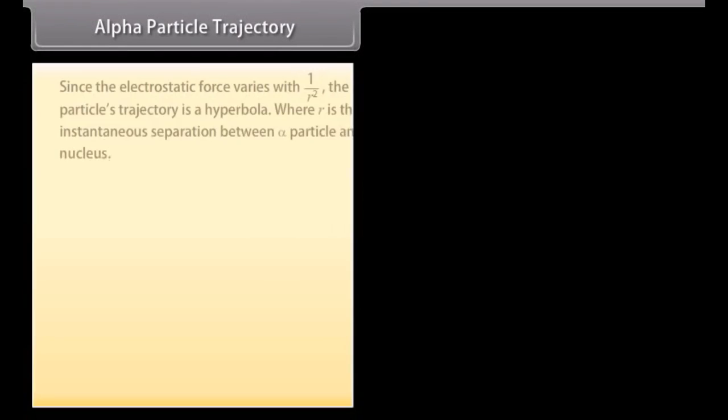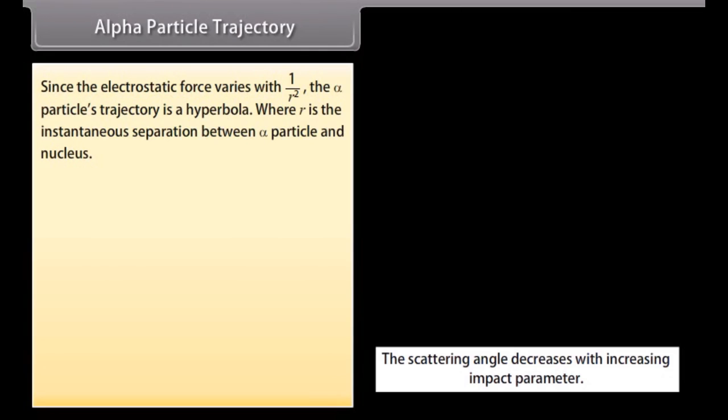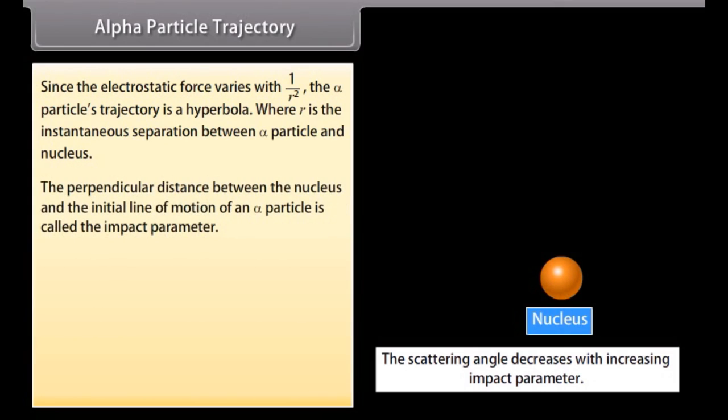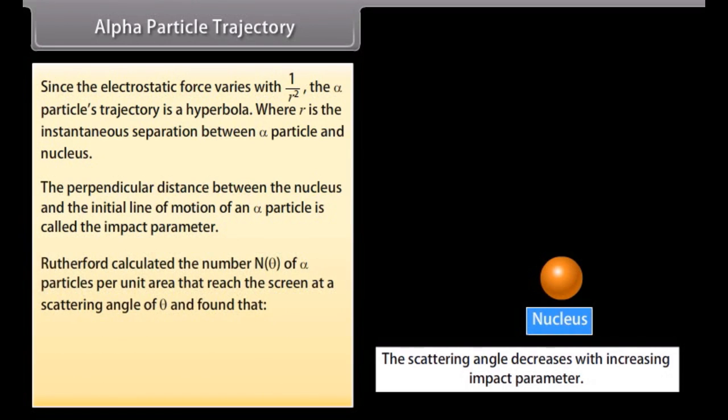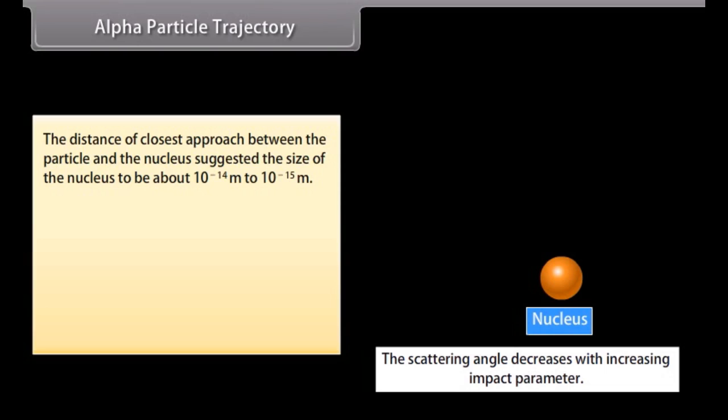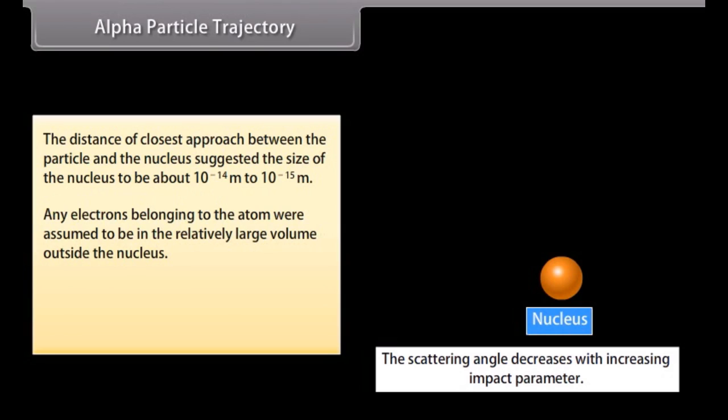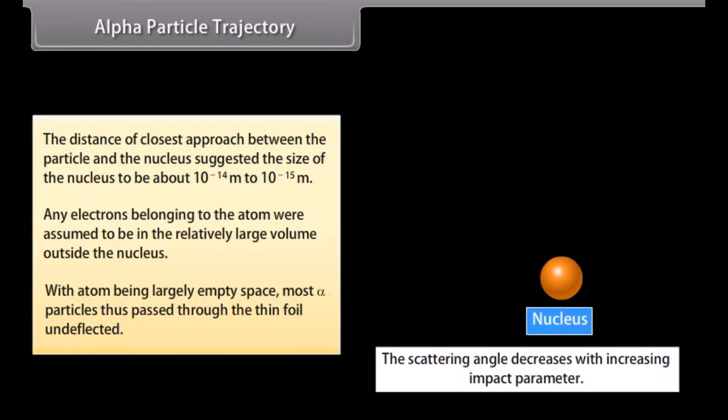Alpha particle trajectory. Since the electrostatic force varies with 1 upon R square, the alpha particle's trajectory is hyperbolic, where R is the instantaneous separation between alpha particle and nucleus. The perpendicular distance between the nucleus and the initial line of motion of an alpha particle is called the impact parameter. Rutherford calculated the number N theta of alpha particles per unit area that reached the screen at a scattering angle of theta and found that N theta is inversely proportional to sin theta upon 2 raised to the power 4. The distance of closest approach between the particle and nucleus suggested the size of the nucleus to be about 10 raised to the power minus 14 meter to 10 raised to the power minus 15 meter. Any electrons belonging to the atom were assumed to be in the relatively charged volume outside the nucleus. With the atom being largely empty space, most alpha particles thus passed through the thin foil undeflected.